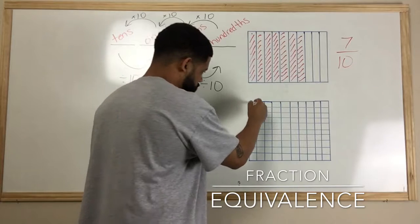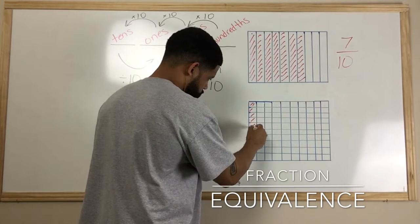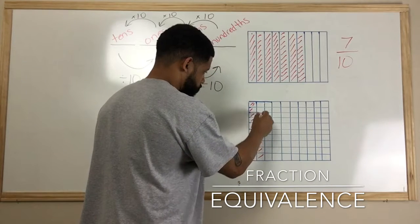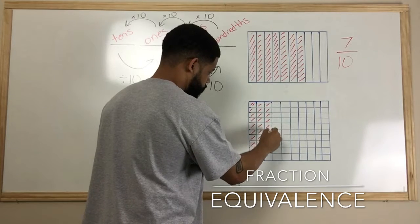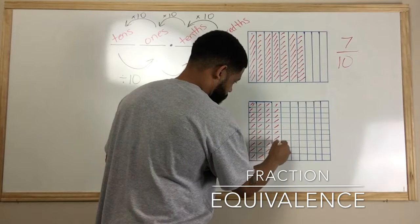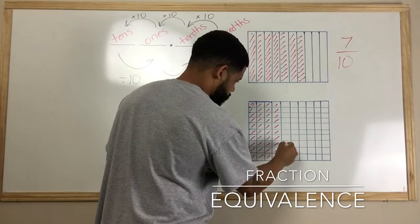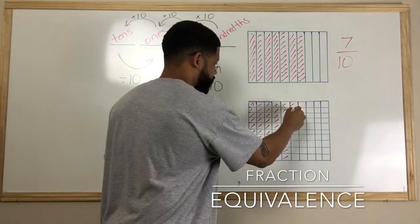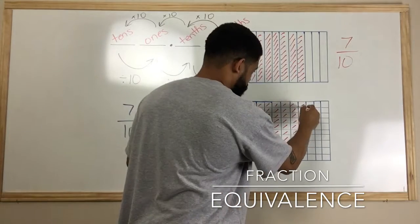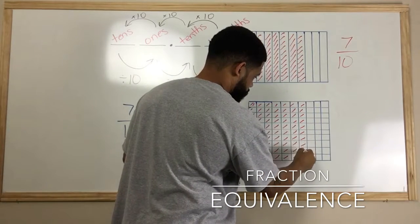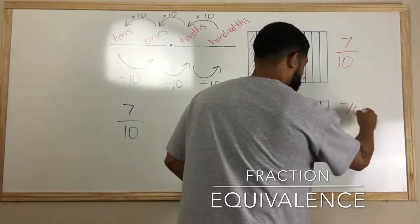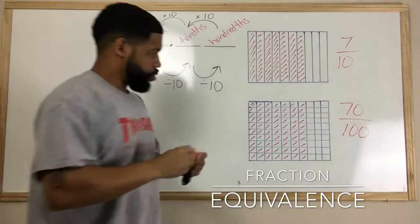So let's go. So there's 10, 20, 30, 40, 50, 60, 70 pieces. So that means we would have to shade in 70 out of 100 pieces to represent the same value as the 7/10.